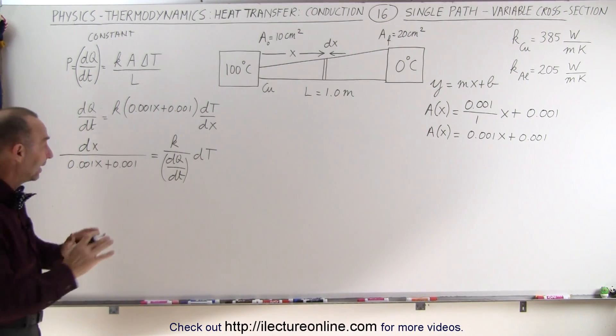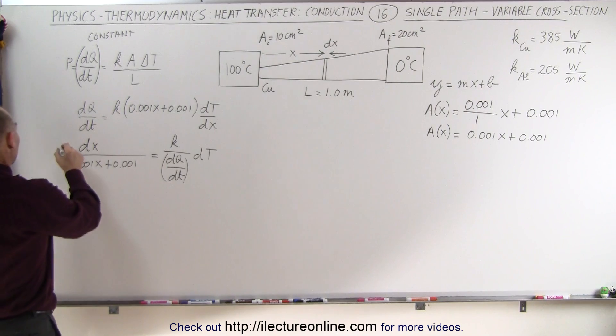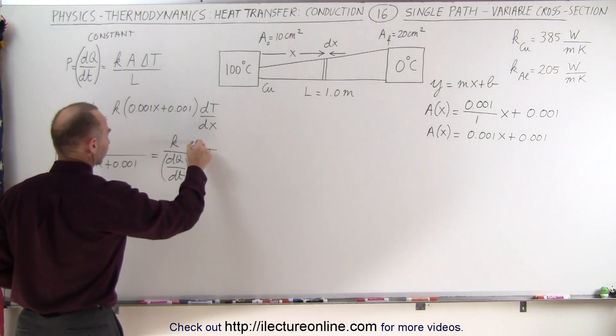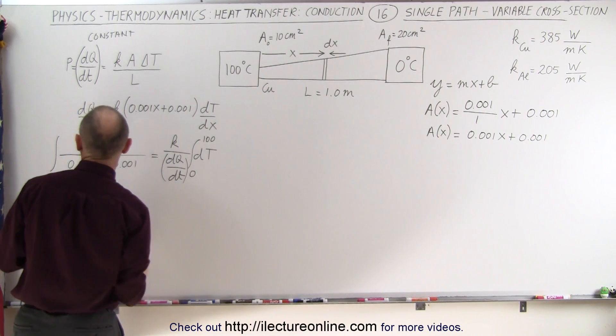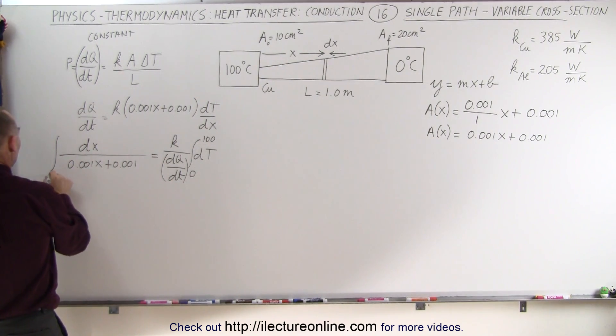So now we can go ahead. Since we have separated the variables, we can integrate both sides. The temperature is from 0 to 100, and the distance is from 0 to 1.